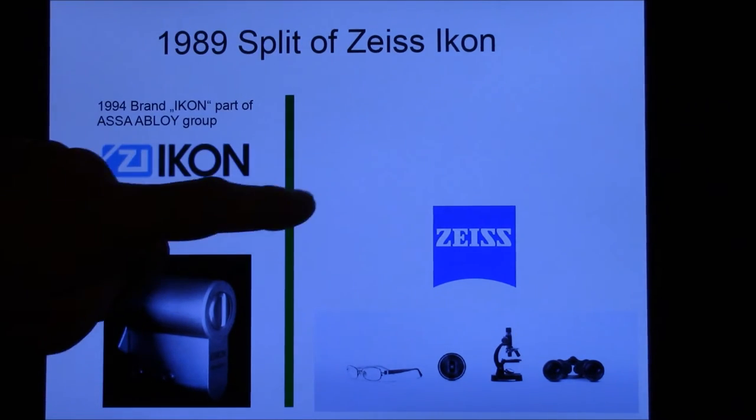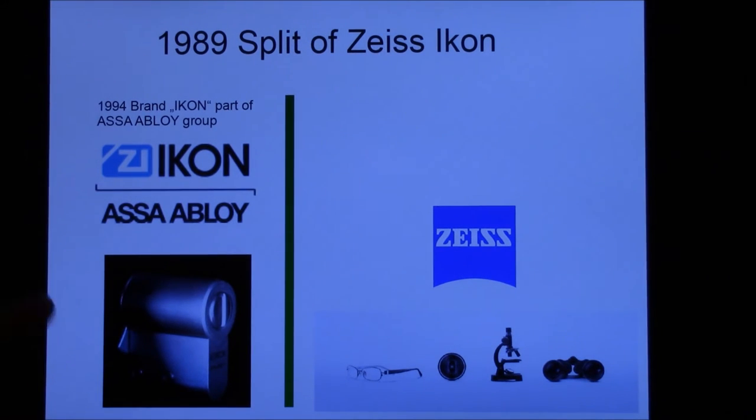The name Zeiss was not transferred to the lock part. In 1994, it became part of the worldwide acting Assa Abloy group. Both parts are making state-of-the-art products and are known worldwide. That's why we have locks with the name Zeiss Icon on the front which were made before the split, and we have locks of newer manufacturing date that are only named Icon.